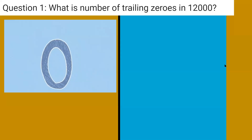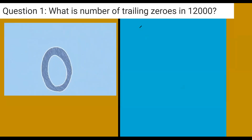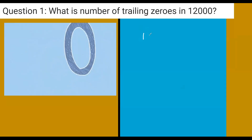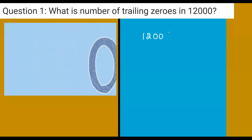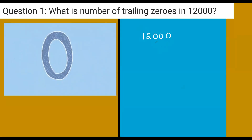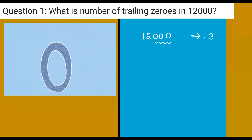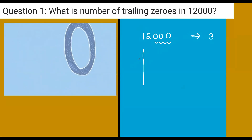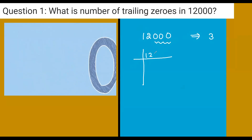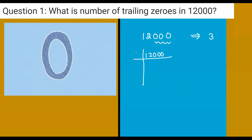So what is the number of trailing zeros in 12,000? When you have 12,000, trailing zeros means how many zeros occur consecutively at the end of the number. So you can say three, without doing anything. Just see the logic behind it — we'll try to factorize this. So it will be 10 times 1200, then 10 times 120, then 10 times 12.